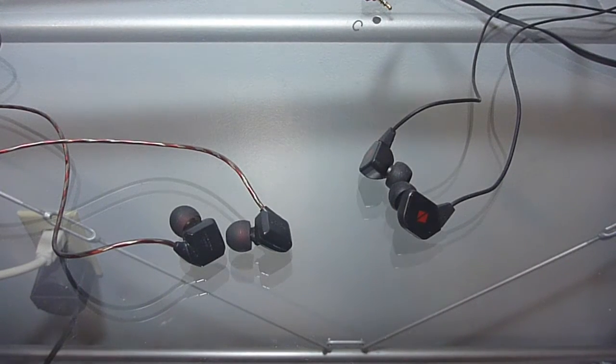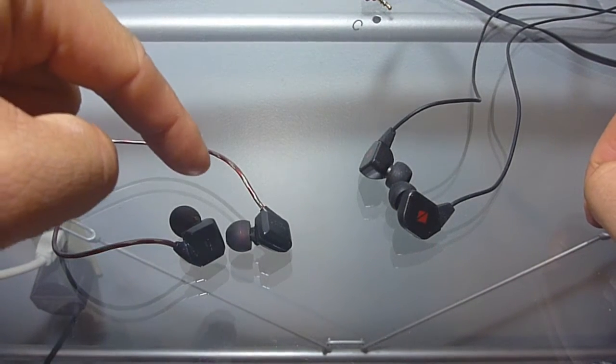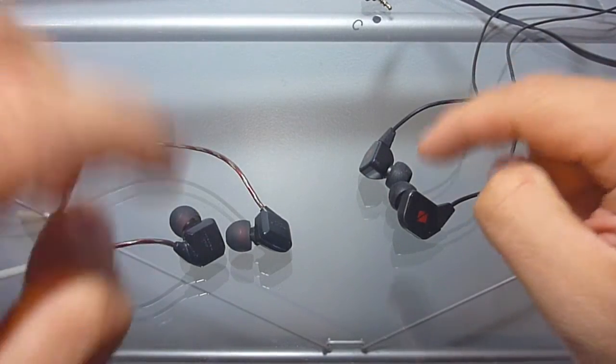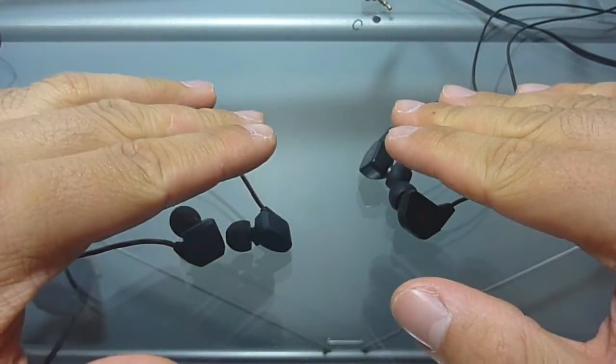So in terms of build quality, both the earpieces on the vSonic GR07 and the Havi earphones are both made out of plastic. So I would say that's a draw in that category.